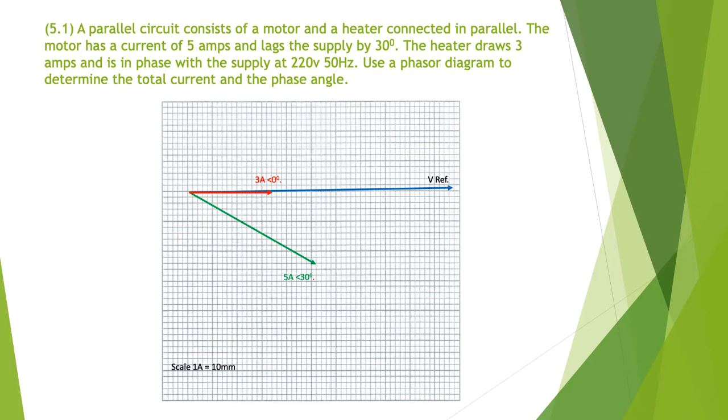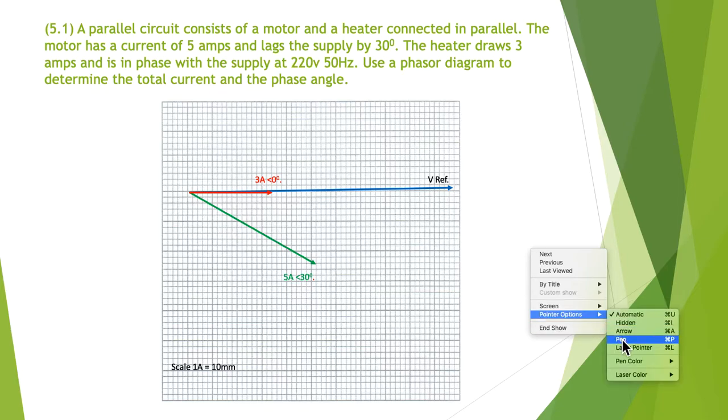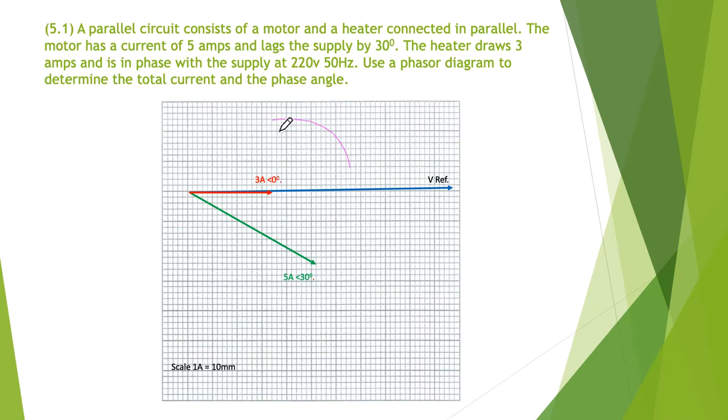The next thing we have to add is our five amps at 30 degrees. And remember, we're told this lags by 30 degrees, so it's sitting behind. Remembering our phasor rotation is that direction. Therefore, this angle in here is at minus 30 degrees or 30 degrees lag.